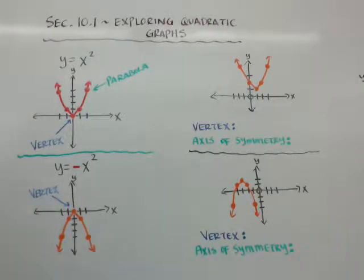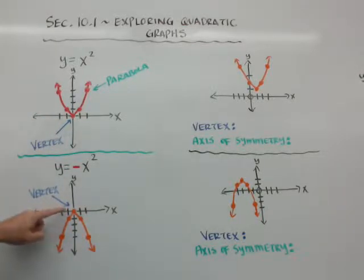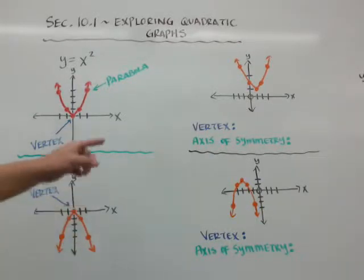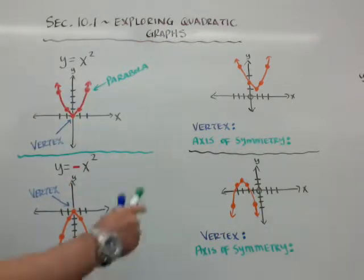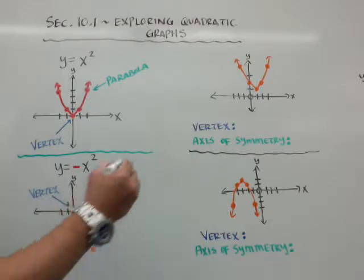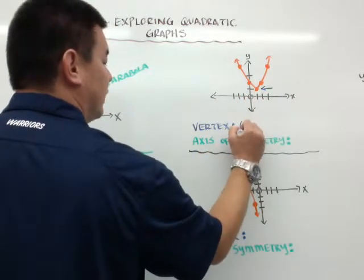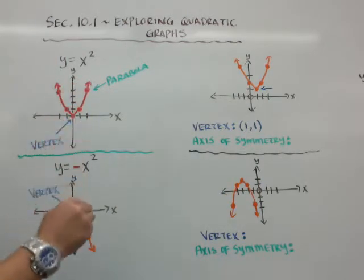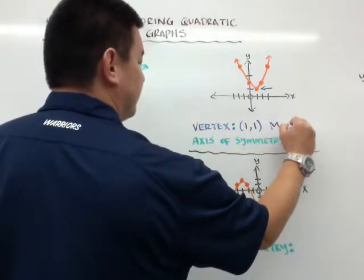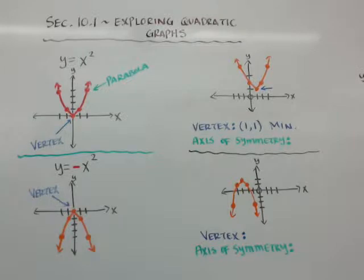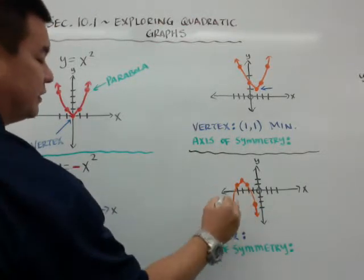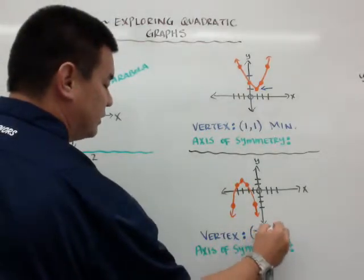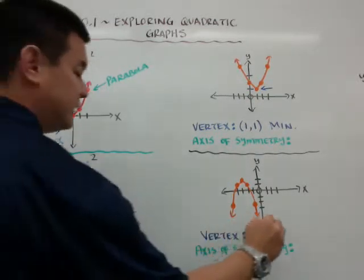There are a couple things you need to see. When it opens upward, the vertex is the minimum because it's the lowest point. When it's negative, the vertex is the maximum because it's the highest point — it's like if you throw something up and it comes back down. Here are a couple examples. You can see this vertex here has coordinates 1, 1, and since it's the lowest point of the graph, it's the minimum. And in this one, the vertex is at negative 3, 2 — it's the highest point, therefore it's the maximum.